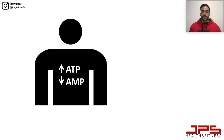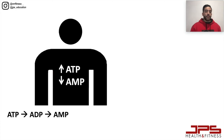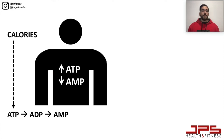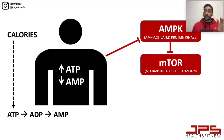AMPK detects energy levels within the cell by monitoring the ATP-to-AMP ratio. ATP is the energy currency of our cells — our body runs on ATP. When ATP gets broken down and used for energy, it gets converted into ADP and AMP. If we have a high amount of ATP and a low amount of AMP, AMPK registers that and does not get activated — it gets blunted. Caloric intake will influence the amount of ATP we have available.